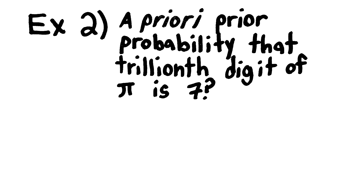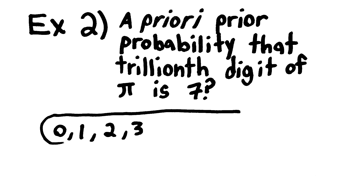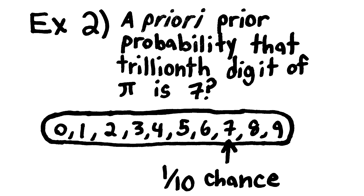What is the prior probability that the trillionth digit of pi is 7? A natural answer is that, until we do some calculations, we should have a credence of 10% that the trillionth digit of pi is 7, because we have no reason to expect this digit rather than any other.